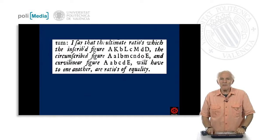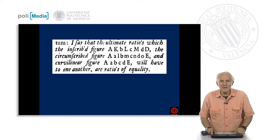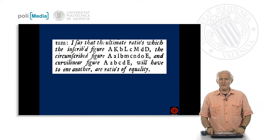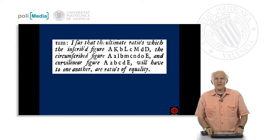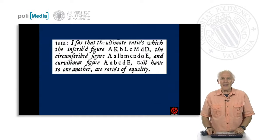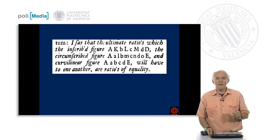And now what he says is, I say that the ultimate ratios which the inscribed figure, A, K, B, L, E, M, D. This is almost like a sort of going to the optician. The circumscribed figure, A, little a, L, B, N, C, N, D, O, E. And the curvilinear figure, A, A, B, E, D, E, will have to one another our ratios of equality.